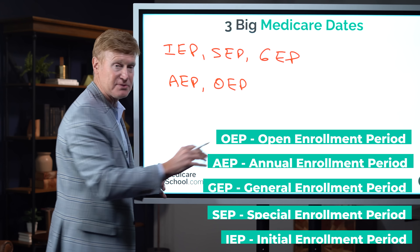The second big date is January 1st to March 31st — the Open Enrollment Period. This is different from AEP: during this period you can do some switching, but you cannot switch drug plans, and you cannot switch from a Supplemental Plan to an Advantage Plan. However, if you're on an Advantage Plan, you can go to a new Advantage Plan, or you can return to Original Medicare and get a Supplemental Plan. There are some rules to getting those Supplemental Plans, but this is the time period to take that particular action.